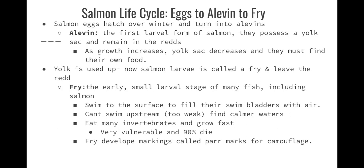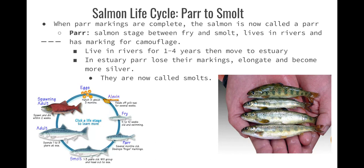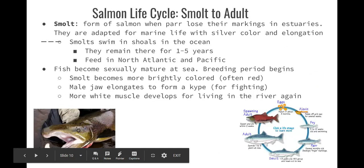Fry will start to develop markings called parr marks, which help them with camouflage. When parr markings are complete, the salmon is now called a parr. A parr is a salmon stage between a fry and a smolt — they live in rivers and have markings for camouflage, living there about one to four years before moving to an estuary. Moving to the estuary from freshwater, they'll need to develop active transport methods in their gills to help them be in a different salinity environment. In the estuary, the parr markings start to go away, the fish becomes elongated and more silver — now they're called smolt.